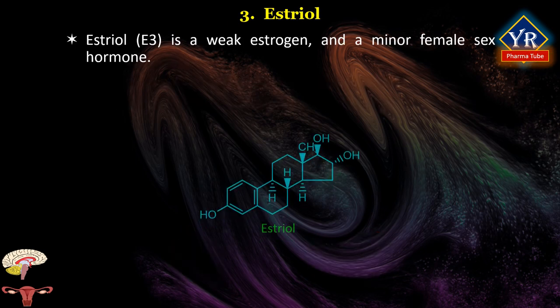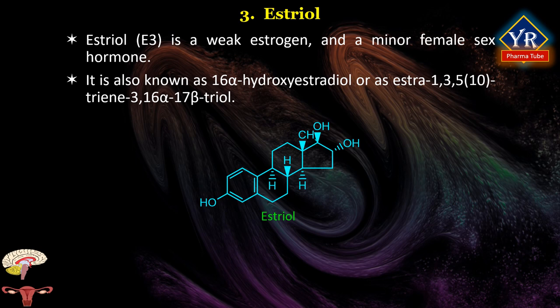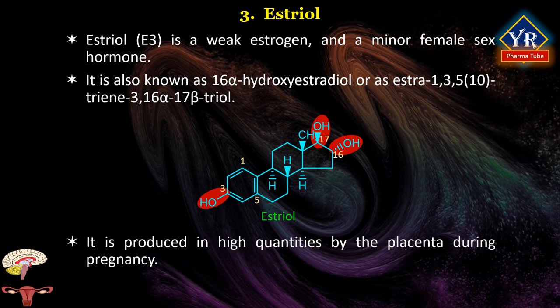Estriol is a steroid, a weak estrogen, and a minor female sex hormone. It is also known as 16-alpha-hydroxy-estradiol or as estra-1,3,5(10)-triene-3,16-alpha,17-beta-triol. It is a naturally occurring estrogen steroid with double bonds between C1–C2, C3–C4, and C5–C10 positions, and possesses three hydroxyl groups at C3, C16-alpha, and C17-beta. The name estriol and abbreviation E3 are derived from 'estra-1,3,5(10)-triene' and 'triol' (3 hydroxyl groups). It is produced in high quantities by the placenta during pregnancy, and relative to estradiol, estriol has far weaker estrogenic activity.